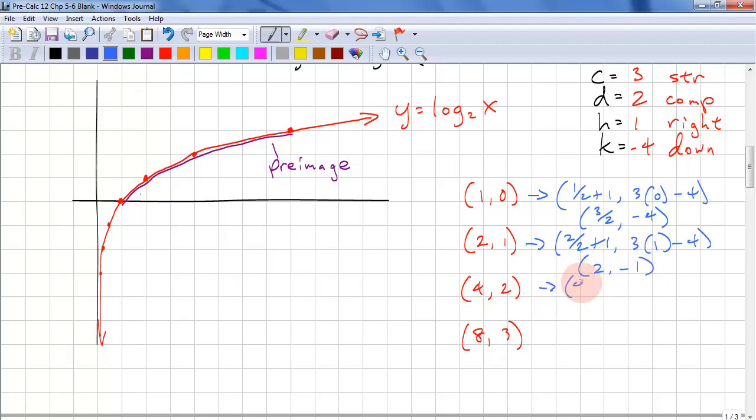This is 4 over 2 plus 1, 3 times 2 minus 4, which simplifies to (3, 2). Finally we have 8 over 2 plus 1, and 3 times 3 minus 4. That simplifies to (5, 5).